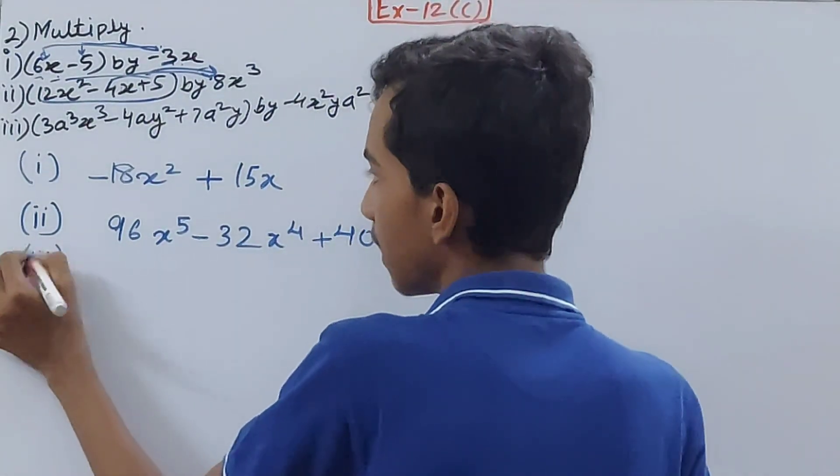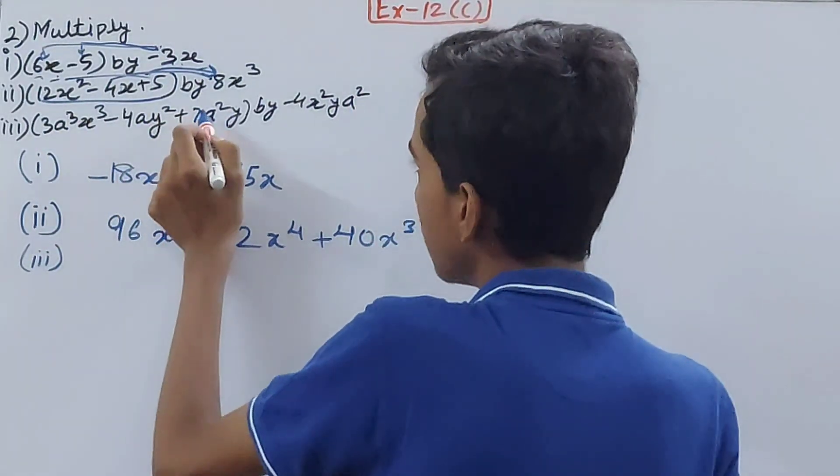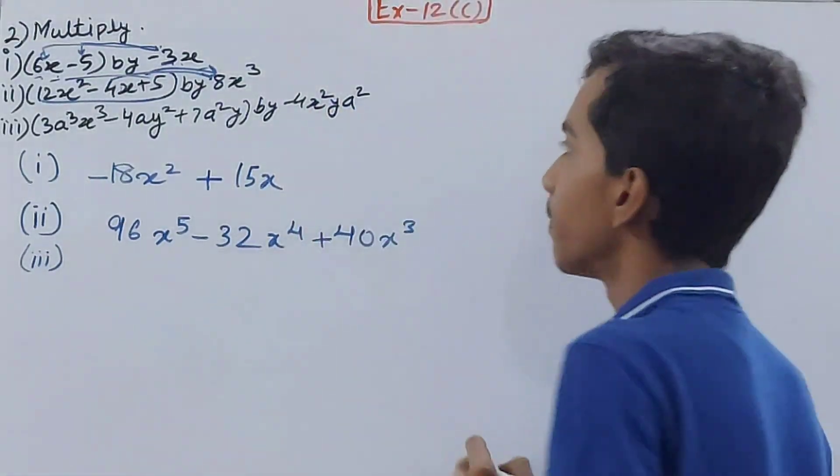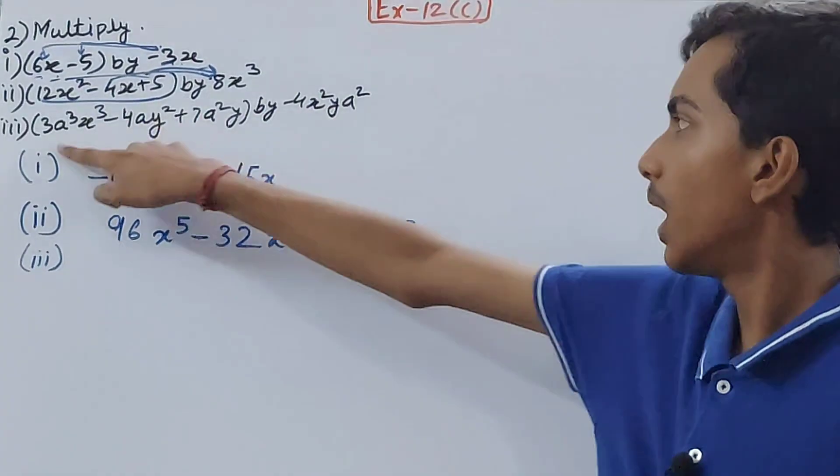Part 3: (3a³x³ - 4ay² + 7a²y) by -4x²ya². This is a trinomial, and all three terms will be multiplied with the number outside.